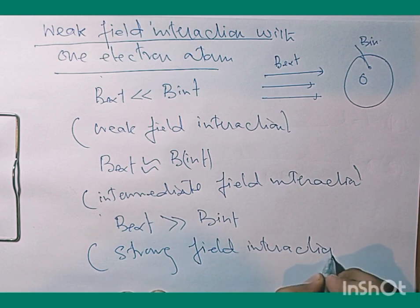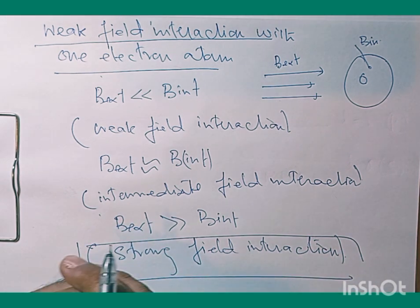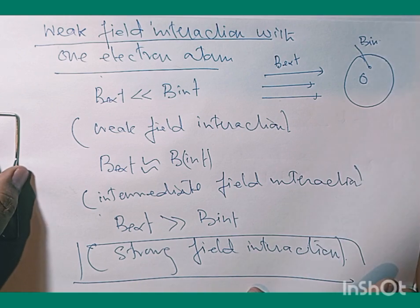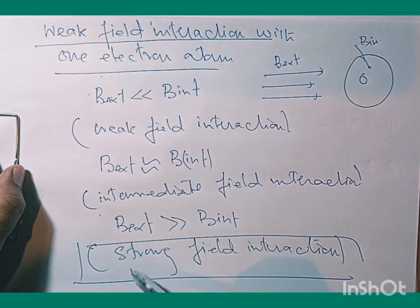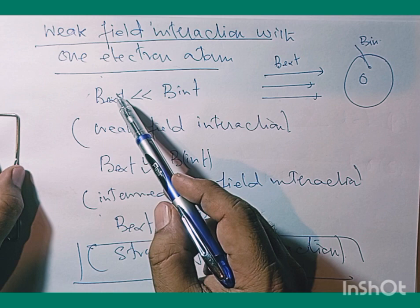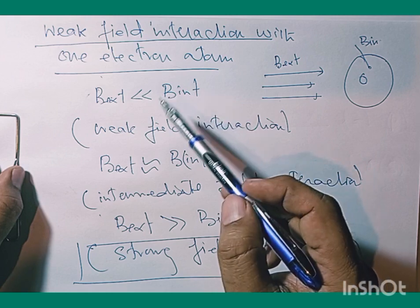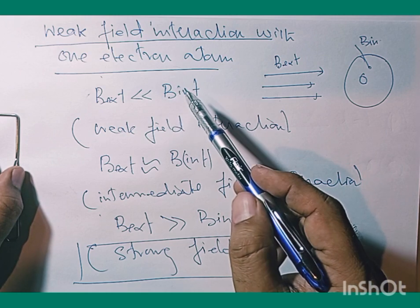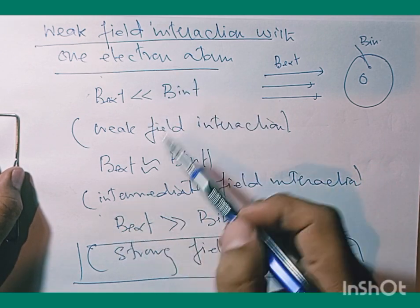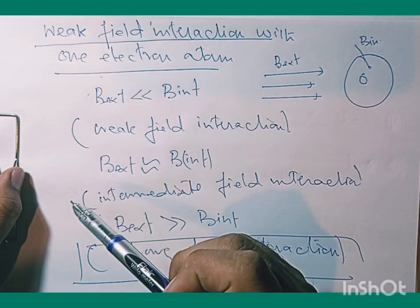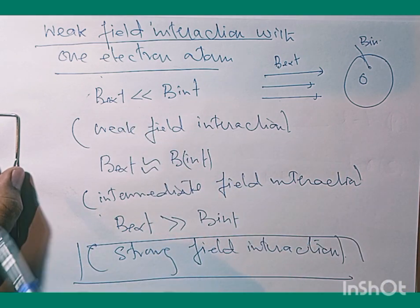Strong field interaction automatically leads to the Paschen-Back effect. In this video, we'll be talking about the weak field interaction. Since the magnitude of the external magnetic field is less than the internal field, the internal spin-orbit interaction can be treated as the unperturbed term, and the external magnetic field is treated as a perturbation.